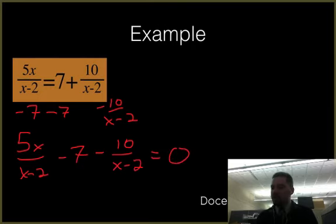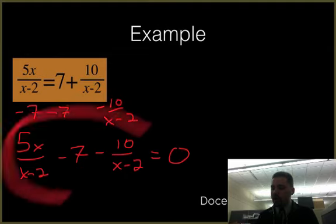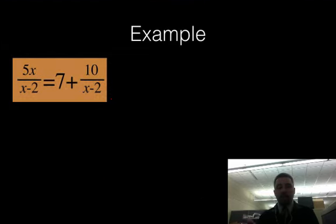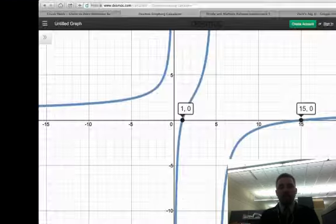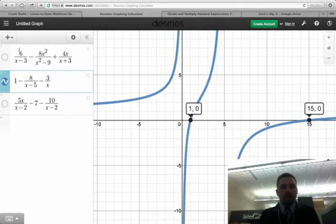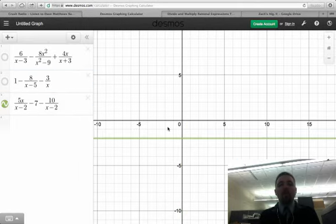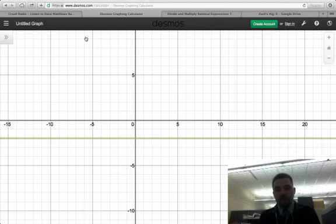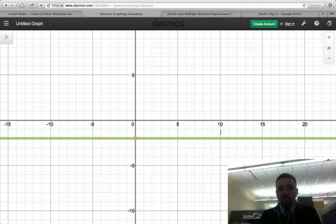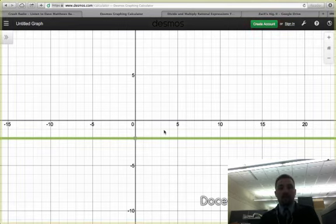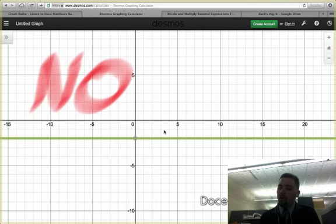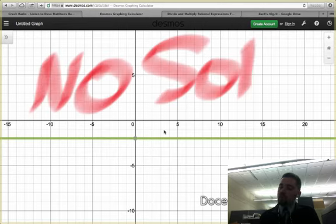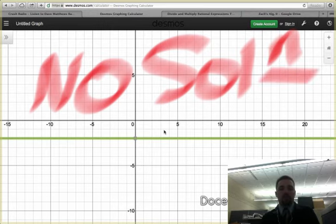Put all of this stuff that's on the left in your calculator and graph it, and then find the x-intercepts. So when you do that, you get this graph right here. Oh my goodness, it's a horizontal line. All right, so I'm looking for the x-intercepts of this thing, and it looks like there aren't any. There are no x-intercepts. So guess what that means? If it never crosses the x-axis, there is no solution. No solution. If there's no x-intercepts, then there's no solution.